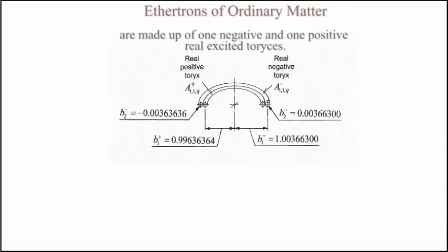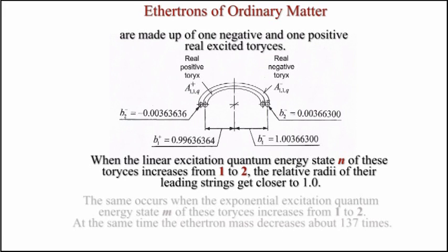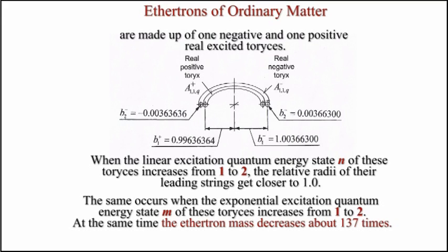Aetherotrons of ordinary matter are made up of one negative and one positive real excited torese. When the linear excitation quantum energy state n increases from 1 to 2, the relative radii of their leading strings get closer to 1. The same occurs when the exponential excitation quantum energy state m increases from 1 to 2. At the same time, the aetherotron mass decreases about 137 times.